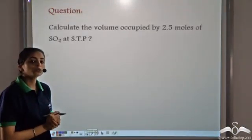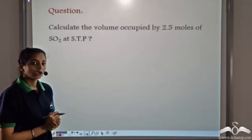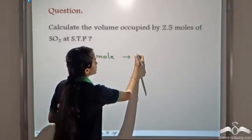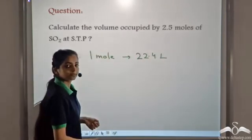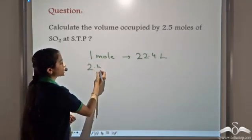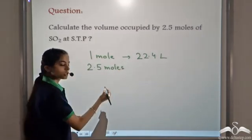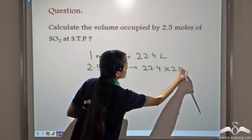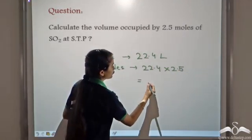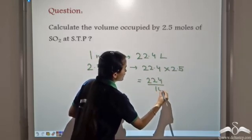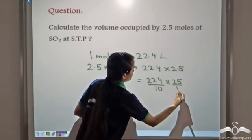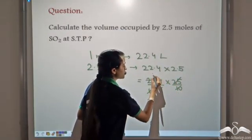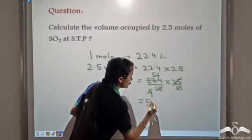Calculate the volume occupied by 2.5 moles of sulphur dioxide gas. We know 1 mole of gas occupies 22.4 litres at STP. We are directly given 2.5 moles of sulphur dioxide gas. So this will occupy 2.5 multiplied by 22.4. Calculating this gives us 56 litres.